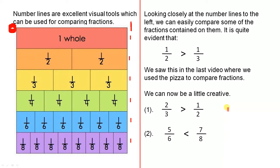We can now be a little creative. Let's see how 2 thirds is greater than a half. Now 2 thirds is that interval there — it represents those two parts, so there's 2 thirds up to here. But a half only goes up to there. So that's why 2 thirds is greater than a half.